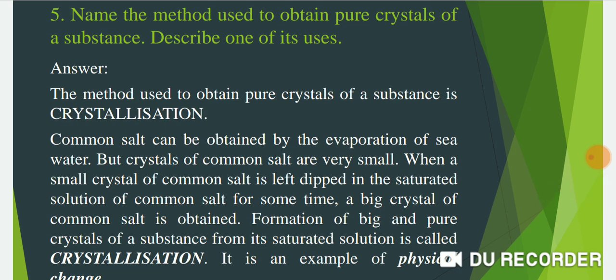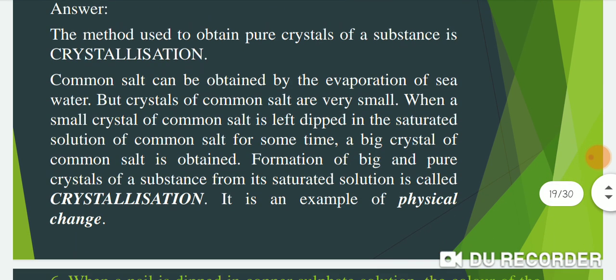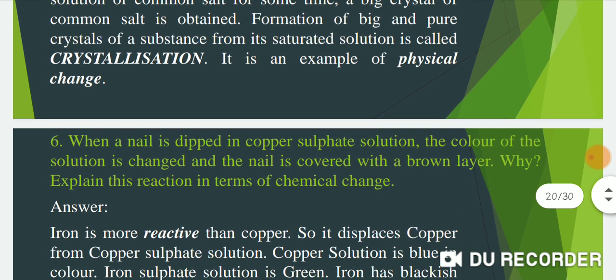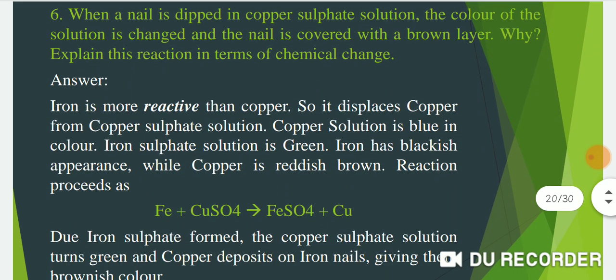...a big crystal of common salt is obtained. Formation of big and pure crystals of a substance from its saturated solution is called crystallization. It is an example of a physical change. Now question number six: when a nail is dipped in copper sulfate solution, the color of the solution changes and the nail is covered with a brown layer. Why? Explain this reaction in terms of chemical change.